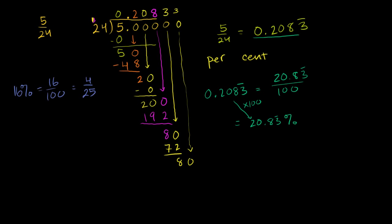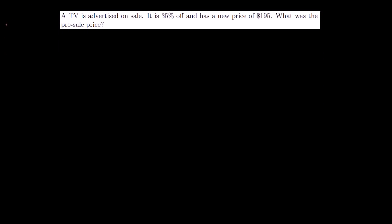Let's do some actual problems now. They tell us a TV is advertised on sale. It is 35% off and has a new price of $195. What was the pre-sale price? So if x is the pre-sale price, when you take 35% off of that, it has a new price of $195. So x minus 35% of x, 0.35 is the same thing as 35%. So if I take x and I subtract 35% of x from x, I'm going to get $195. That's what that is telling me.